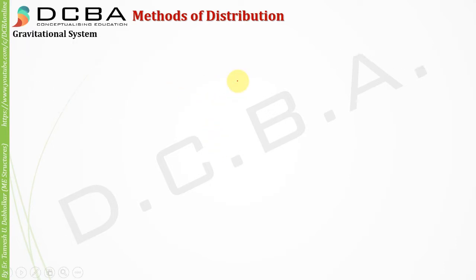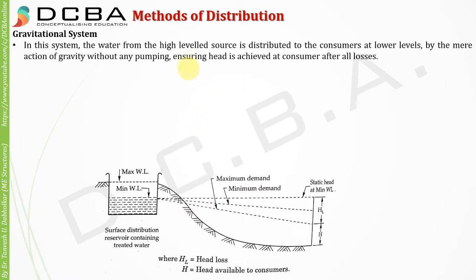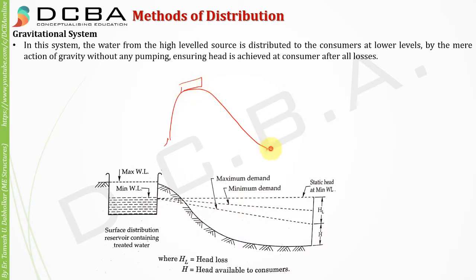Starting with the gravitation system — it is a very simple method. The water from a high level source is distributed to consumers at low level by mere action of gravity, without any pumping. The required head is achieved at consumers after accounting for all losses. In this case the city is located at the foot of a hill, and the water distribution source is above, so water is conveyed to the city just by gravity.